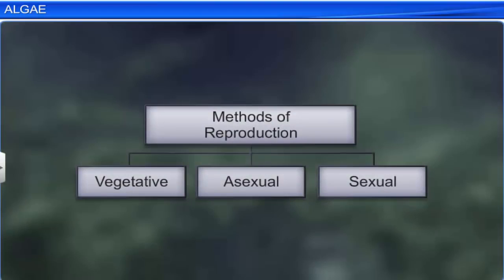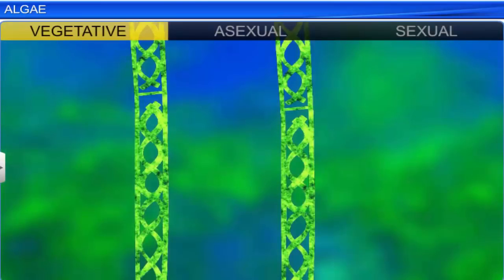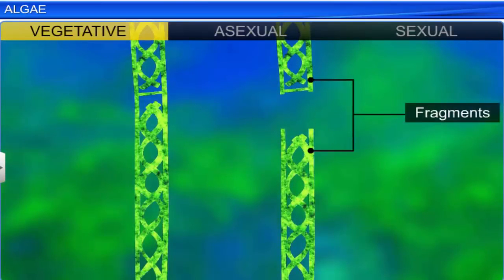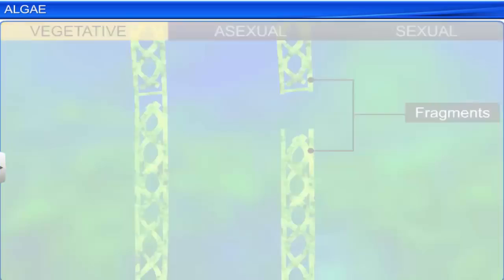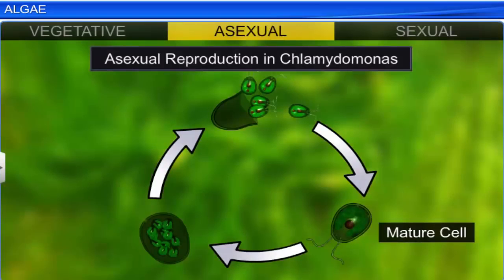Algae reproduce through vegetative, asexual, and sexual methods. Vegetative reproduction occurs by the process of fragmentation, wherein each fragment develops into a thallus, while asexual reproduction takes place through spores like zoospores. These spores are flagellated and germinate into new plants.